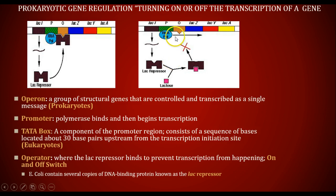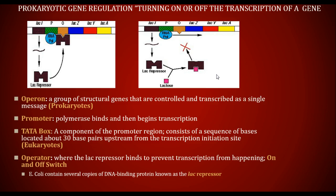When that happens, the RNA polymerase can then make messenger RNA, which will go outside of the cell and make proteins. We're going to take a look at a video that will hopefully help clear this up and better explain it.